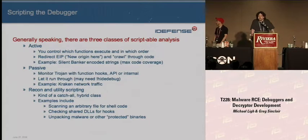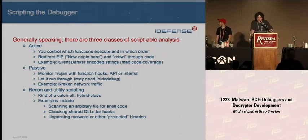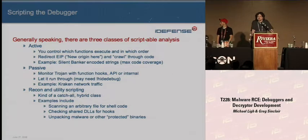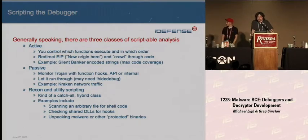There are three basic classes when it comes to scriptable analysis. The first one is what we call active. This is where you're not letting the malcode really do its job — you're not letting it run natively. You find the functions that do the encryption and decryption, attach to them, and only run that function to recover what you need. An example would be trying to recover strings, because malware loves to obfuscate strings. You find the function that decrypts them and run every string you can find through it.